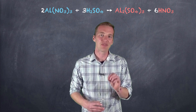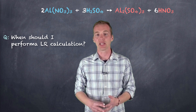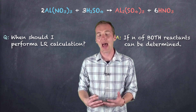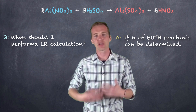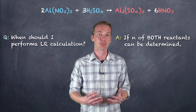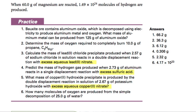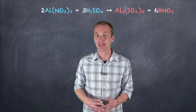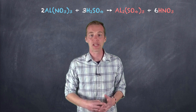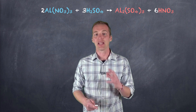First, before we get started, we have to identify when to perform a limiting reagent calculation as opposed to just a standard stoichiometric calculation. The answer is: if you have enough information to calculate the number of moles for both reactants. Typically in textbooks, if it isn't a limiting reagent problem, it will give you the mass of one reactant and say the other is in excess — indicating that the reactant you have is already the limiting reagent. But if you're given the mass of both reactants, or sufficient information to figure out the moles of both, we're going to need a game plan involving limiting reagents.